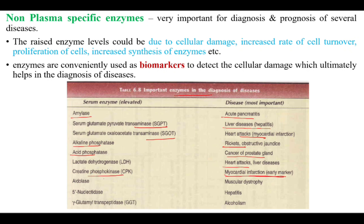Creatine phosphokinase in myocardial infarction is the earliest marker. Aldolase is used in muscular dystrophy, 5-nucleotidase in hepatitis, and GGT in alcoholism.